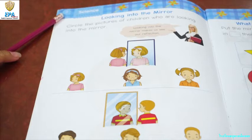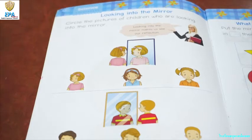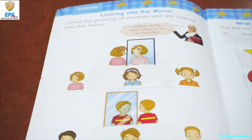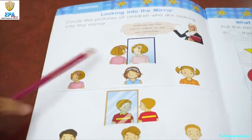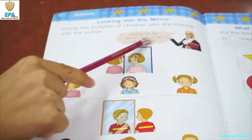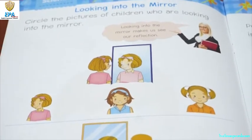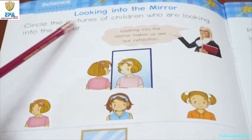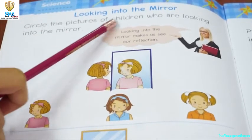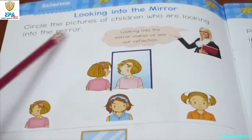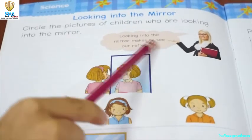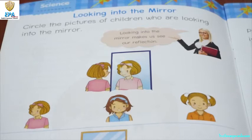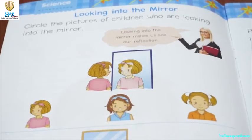Okay kids, open your book page 2. Let's talk about mirrors. If you are looking in the mirror, you will see your reflection. Look at this picture. Let me give you the instruction: circle the pictures of children who are looking in the mirror. Try to observe this picture.